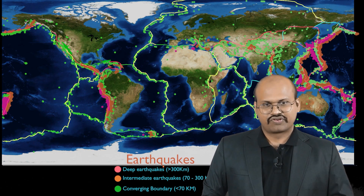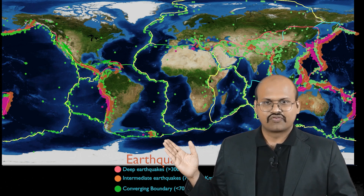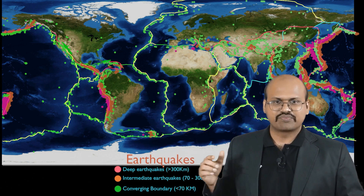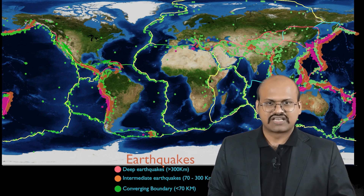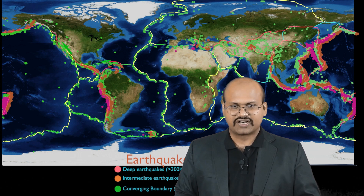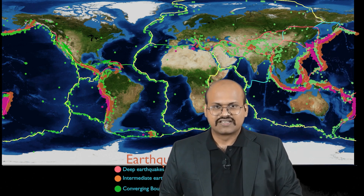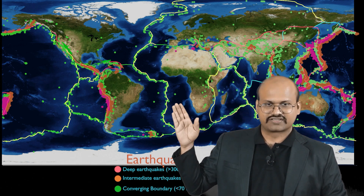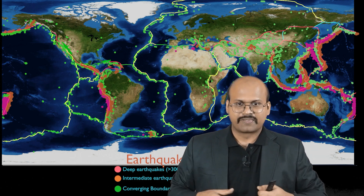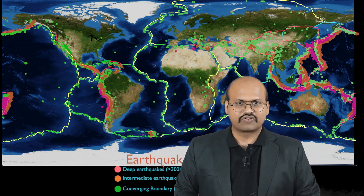At plate margins there are a lot of tectonic activities and earthquakes. Plotting all earthquakes in the world, we can see that 90 to 95% of earthquakes are concentrated on these boundaries. At converging boundaries, we see most of the earthquakes — deep earthquakes and intermediate earthquakes are mainly focused on converging boundaries. At mid-oceanic ridges, which are diverging boundaries, we see shallow earthquakes that do not occur at much depth.